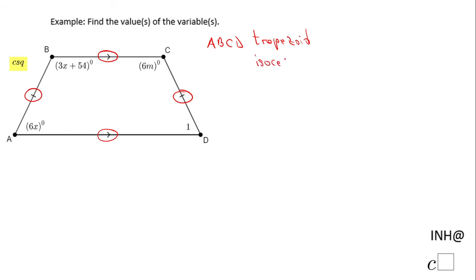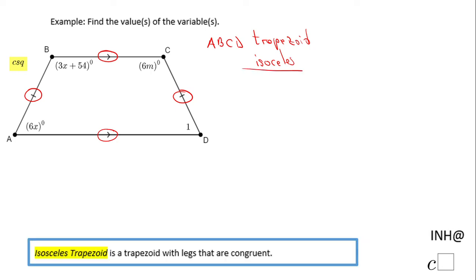So that is what this picture tells us. Here is the definition of an isosceles trapezoid — legs AB and DC are congruent. The property of an isosceles trapezoid is that the base angles are congruent: angle A and angle D are congruent, and likewise the other pair of base angles are congruent.